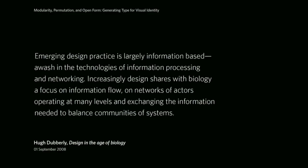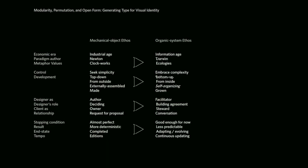What I'm looking at is visual identity design and type in the service of visual identity. There is a movement afoot in visual identity design to think of it more as a flexible system rather than the late modernist idea of a repeatable thing that is static and always appears the same in every instance. In 2008, one of my heroes in design, Hugh Dubberly, wrote an article called 'Design in the Age of Biology,' and he talked about design changing as a discipline — dealing more with technology-based ideas like information flow and networks of actors rather than traditional ideas of form-making. Part of that is his comparison of what he calls a mechanical object ethos versus an organic systems ethos, which is what he claims we're moving toward.